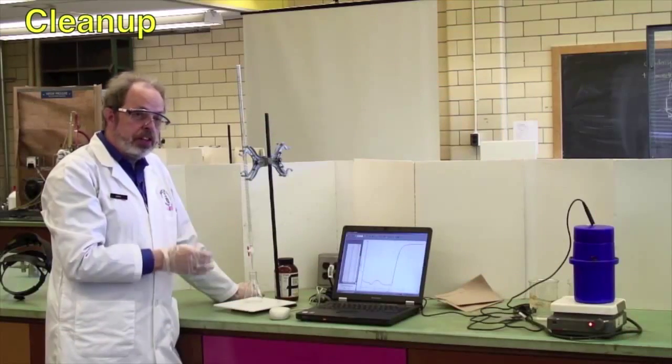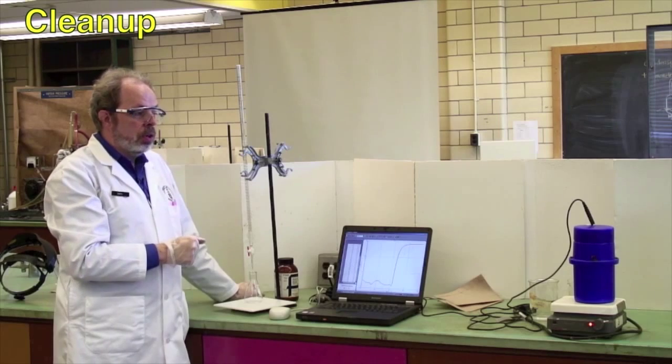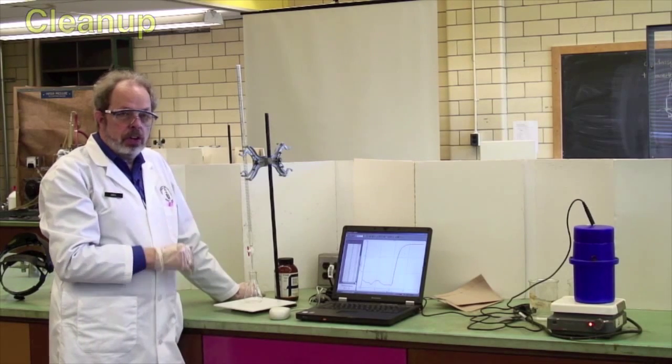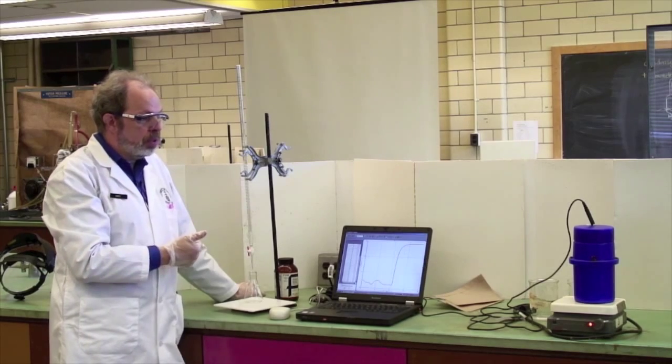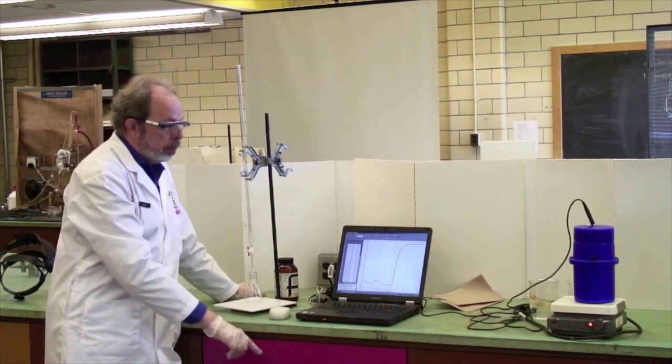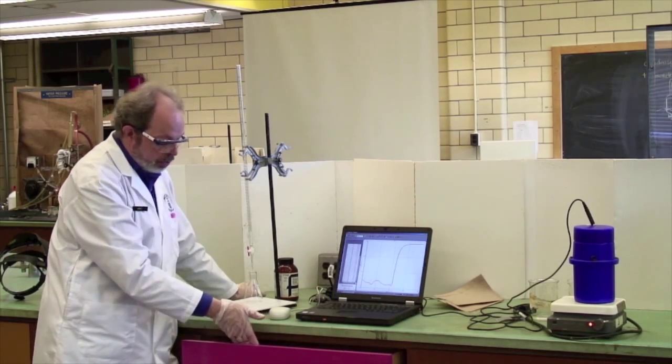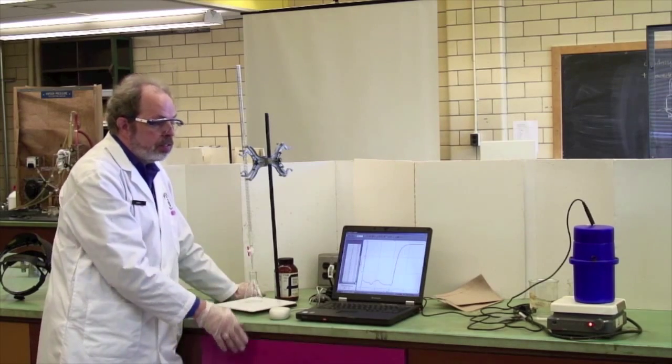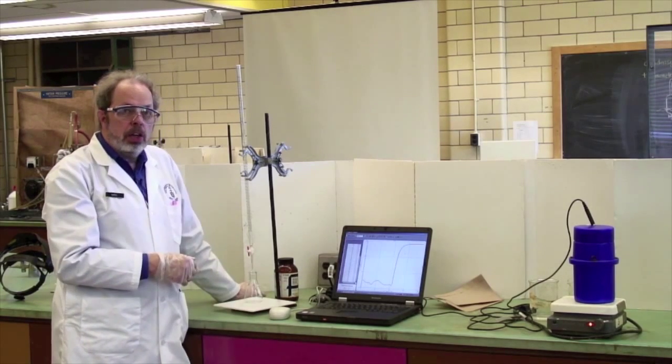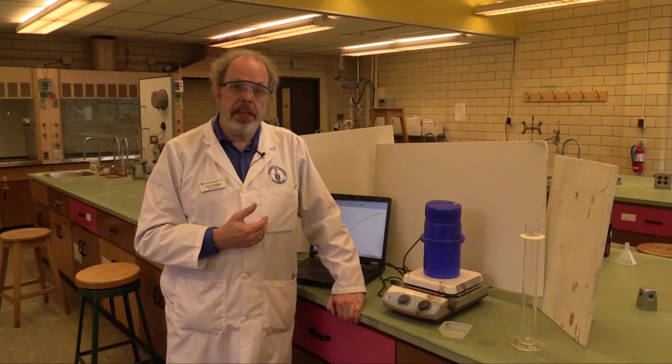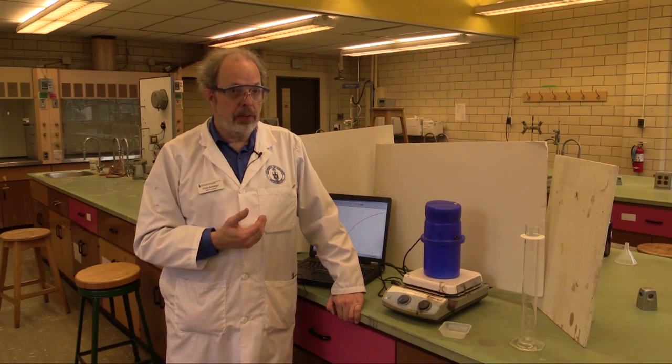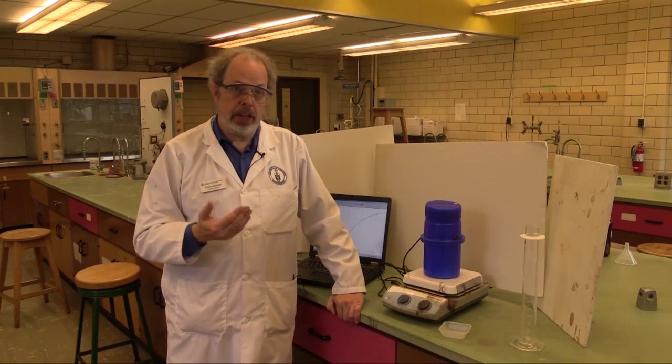Once you have finished this experiment, again, all of your finished solutions can go down the sink with lots of running water. Don't forget to turn the computer off. The hardware for the links actually lives in a box in these drawers here. The computer goes back to your TA. And that is how you collect your data for experiment T2, which is batch calorimetry using a solid unknown.